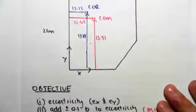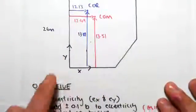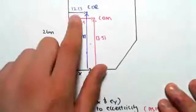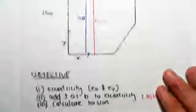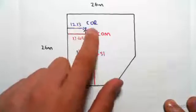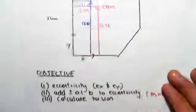We've got 12.13 as the x distance to the center of rigidity minus 12.49, which would give us the distance x between center of rigidity and center of mass. Working that out, we get 0.36 meters.